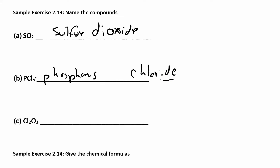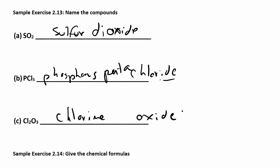PCl5: phosphorus and chloride — don't forget to change the ending to -ide. I have one phosphorus, so I don't write mono, and five chlorides, which is penta. That's phosphorus pentachloride. For Cl2O3: chlorine and oxide. Keep the first element exactly as is — chlorine, not chloride. Two chlorines gives di, and three oxygens gives tri. That's dichlorine trioxide.